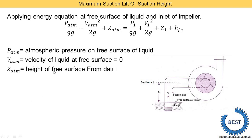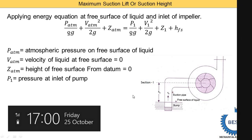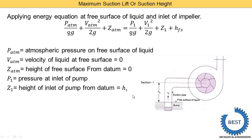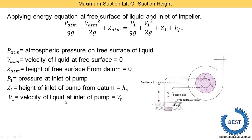z_atmosphere is the height of the free surface from the datum. Since we take the sump level as the datum, z_atmosphere is zero. z1 is the height of the inlet of the pump from the datum, which equals Hs, the suction head, so z1 is replaced by Hs. v1 is the velocity of liquid at the inlet of the pump, denoted Vs, so v1 is replaced by Vs.